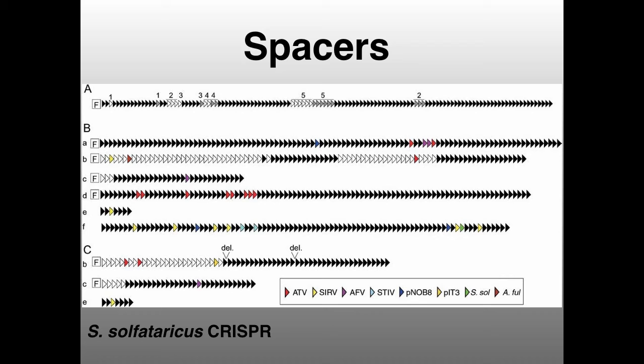Once you have a well-developed CRISPR loci, the spacers can serve as a molecular memory — a roadmap of what viruses you've been challenged with in the past. You can find sequences in the CRISPR loci that are identical to viruses that have infected this organism in the past. Different colored arrows represent sequences identical to sequences found in viruses. This would be a cellular genome that has integrated viral sequences in its CRISPR loci.